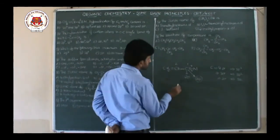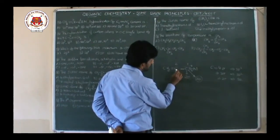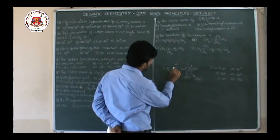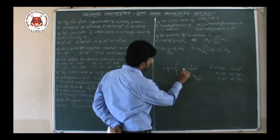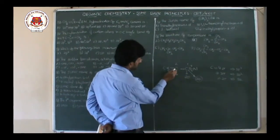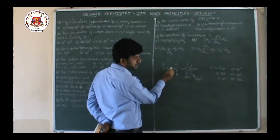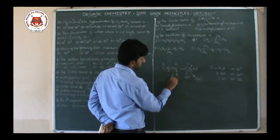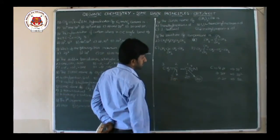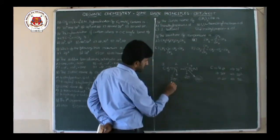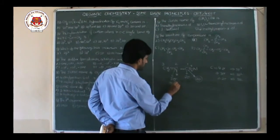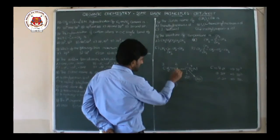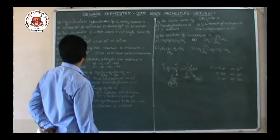So first carbon is SP hybridization. For the second carbon: sigma bond to first carbon, sigma bond to third carbon, and sigma bond to hydrogen — totally three sigma bonds. Three sigma bonds means SP2 hybridization. So the answer: C1 is SP, C2 is SP2.